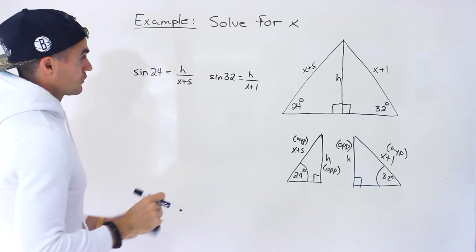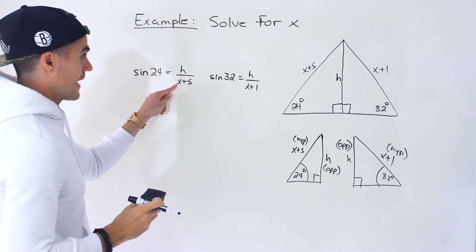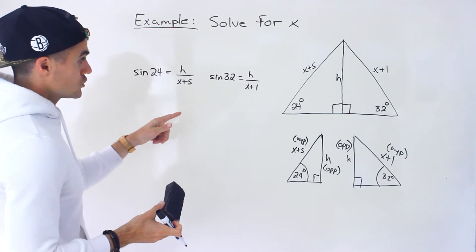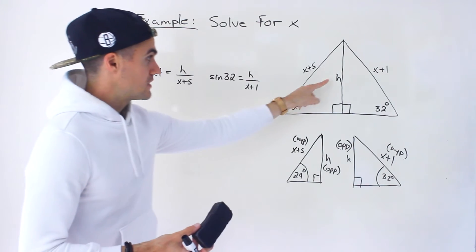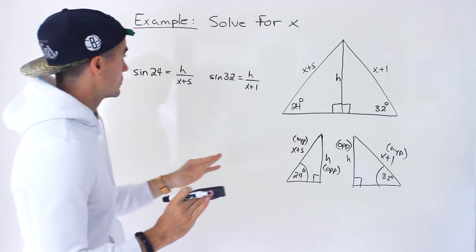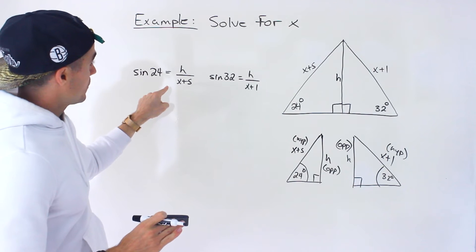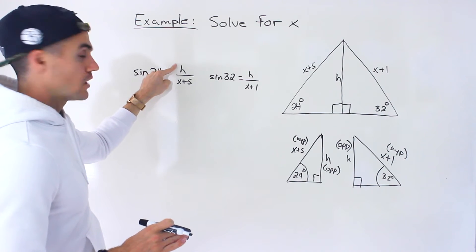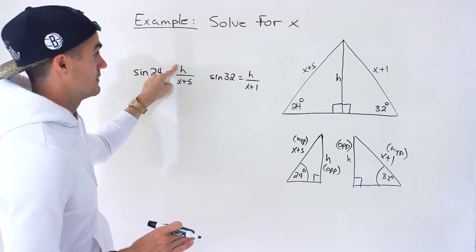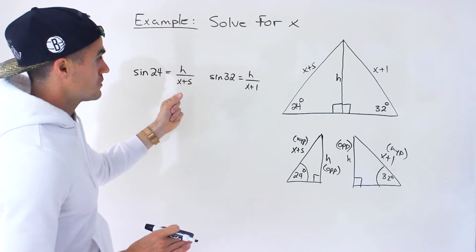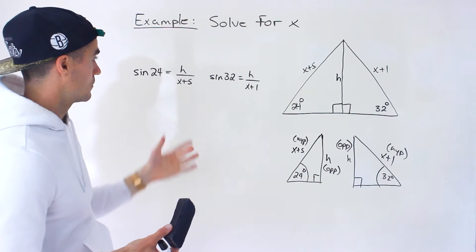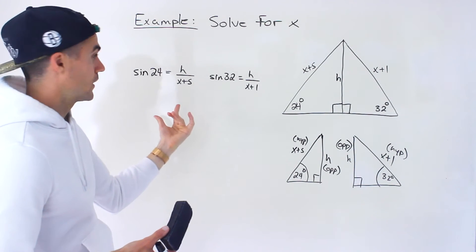Now remember, what are we solving for? We're solving for the x value. But notice that we introduced this new variable for this common side h. Now notice that we actually have two equations that we set up and then two unknowns, the h and the x. So technically now what we can do is solve for h and x with substitution or elimination. Two equations, two unknowns.